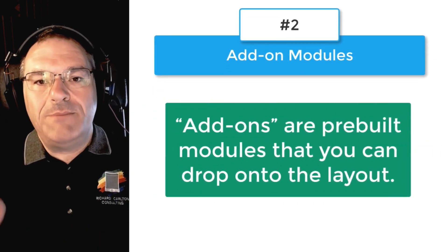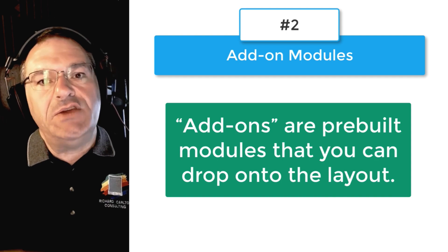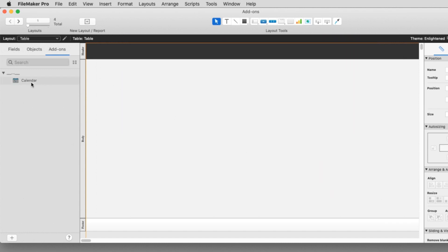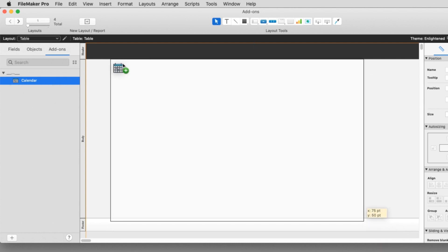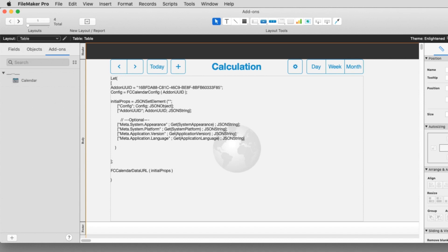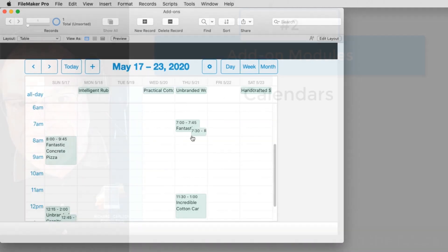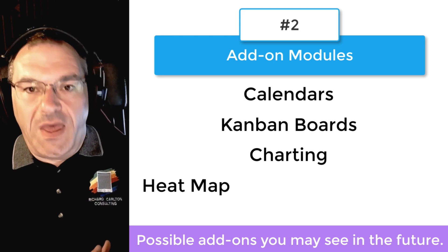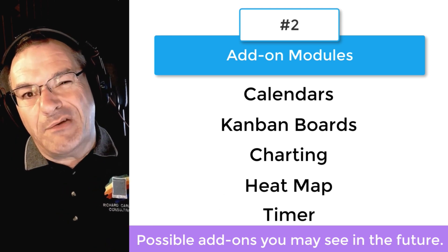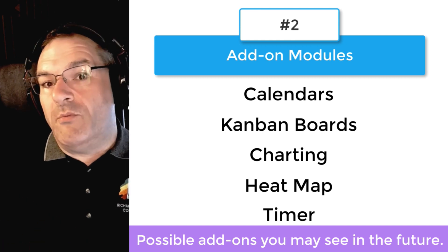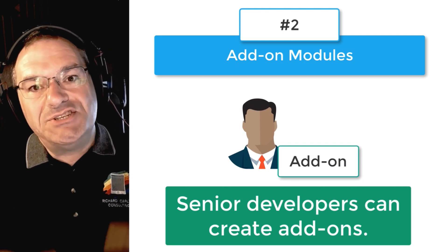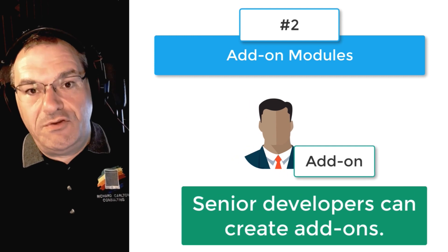Add-on modules are pre-baked packages of capabilities or features that you just drag and drop onto your FileMaker file. For example, you want to drag and drop a calendar onto FileMaker. There have been calendar kits and other software tools that companies have created, but imagine deploying a calendar with a single drag and drop — it's about 80% easier than anything we've had previously. They're also talking about Kanban boards, charting, and all sorts of capabilities that you'd normally have to build yourself or copy from someone else's FileMaker file. Now senior developers in the FileMaker community can build pre-packaged add-on modules that deliver this capability to you.